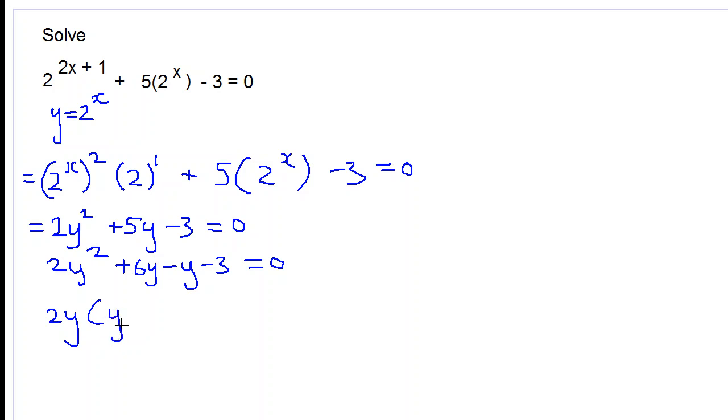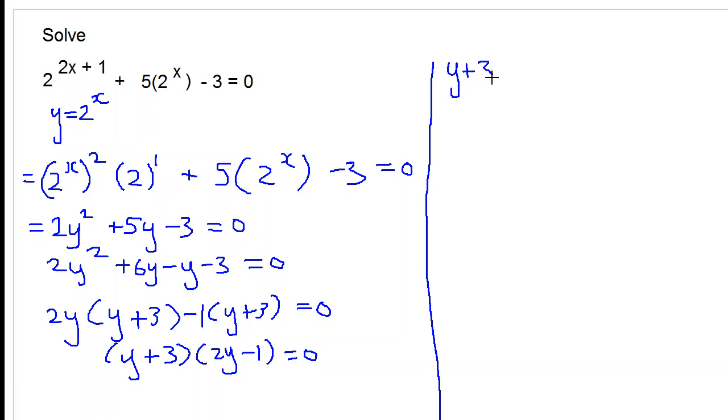Let's factorize this now. 2y times y plus 3, and then we want to get the same bracket over here, y plus 3, so we have to choose negative 1. Let's factorize this completely: y plus 3 times 2y subtract 1 equal to 0.